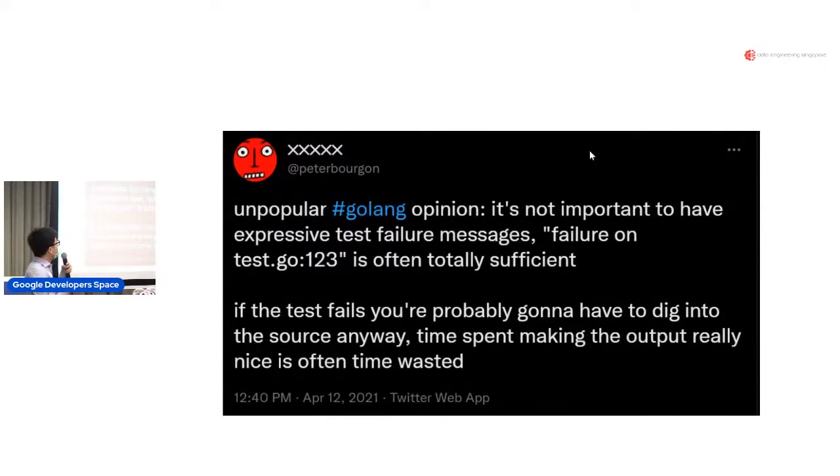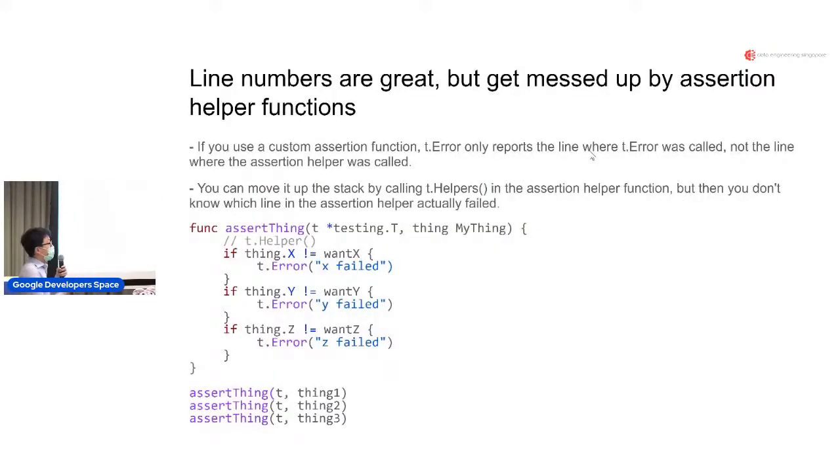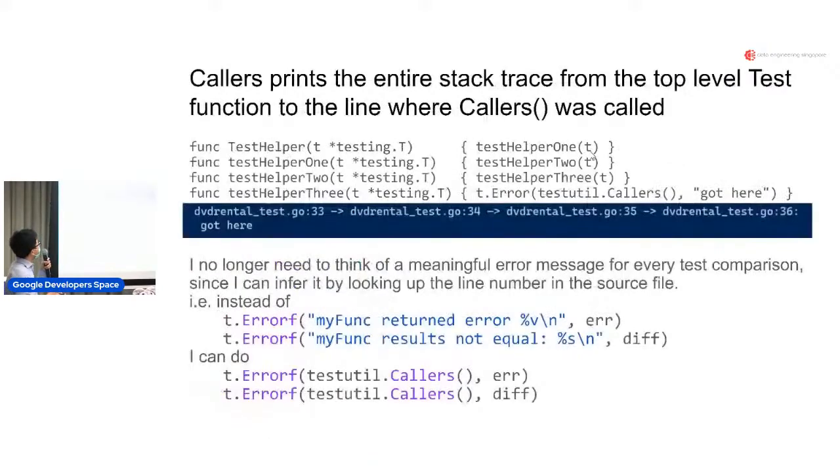What's the use of callers? It started from this tweet. Unpopular Golang opinion - it's not important to have expressive test failure messages. You just need to know where the failure happened, and then you gotta dive into the source anyway. If you spend so much time making a very descriptive error message, then you're often wasting time. But line numbers are great, but they get messed up by assertion helper functions. If you use a custom assert helper function, t.Error only reports the line where error was called, not where the assertion function was called. You can move it up the stack to show where the assertion function was called, but then now you lose the line where t.Error was actually called. So if your assertion function calls t.Error multiple times, you don't know which error was the one that actually triggered. Basically you can either decide whether you want the errors here, here, or here, or you can show the errors here, here, or here, but not both.